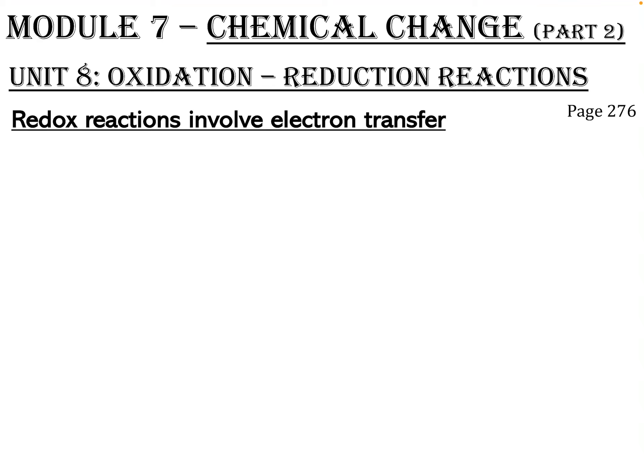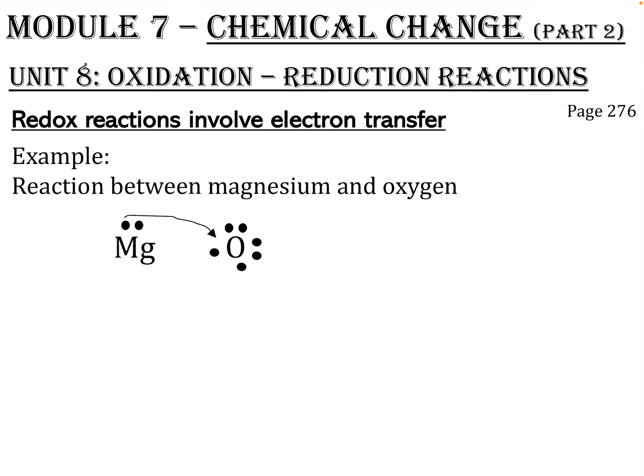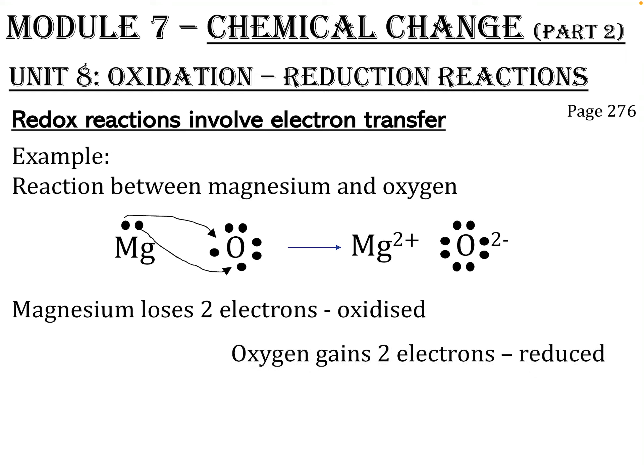Redox reactions involve electron transfer. You know this, you've done this before. For example, when magnesium burns in oxygen, the magnesium will give away its electrons to the oxygen. That results in us getting magnesium 2 plus and oxygen 2 minus. The magnesium has lost two electrons, so it has been oxidized, and the oxygen gains two electrons, so it is reduced.